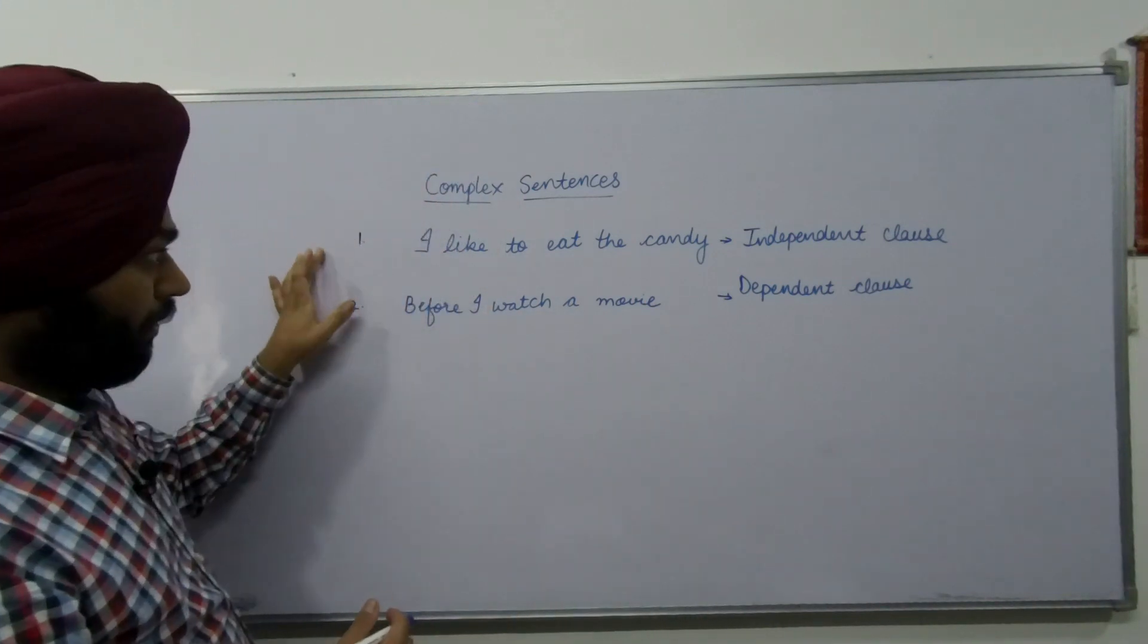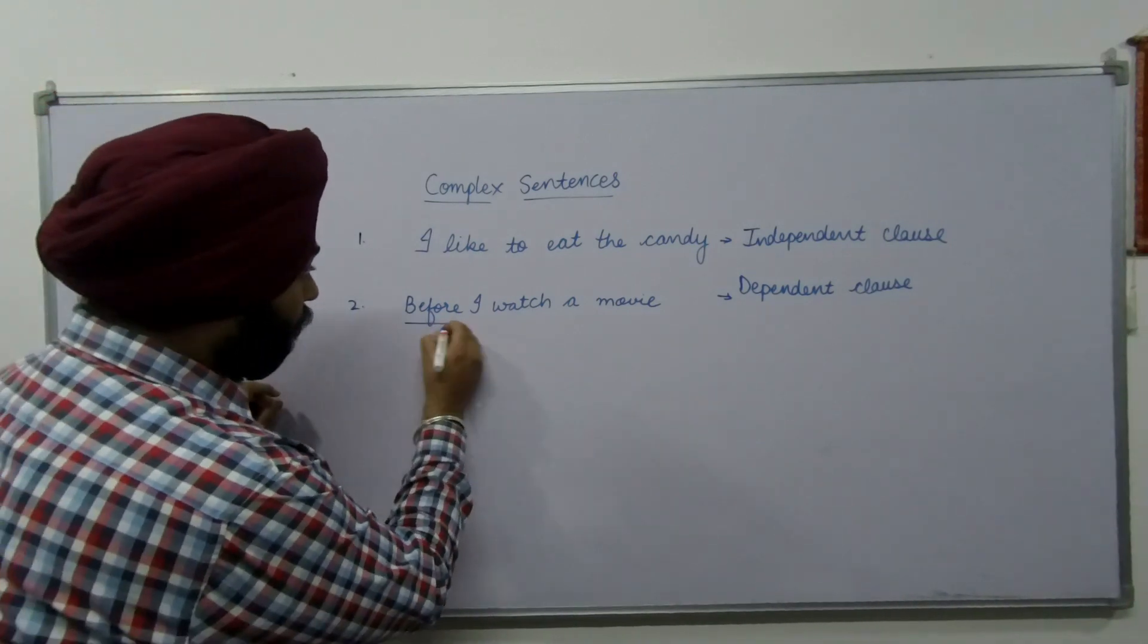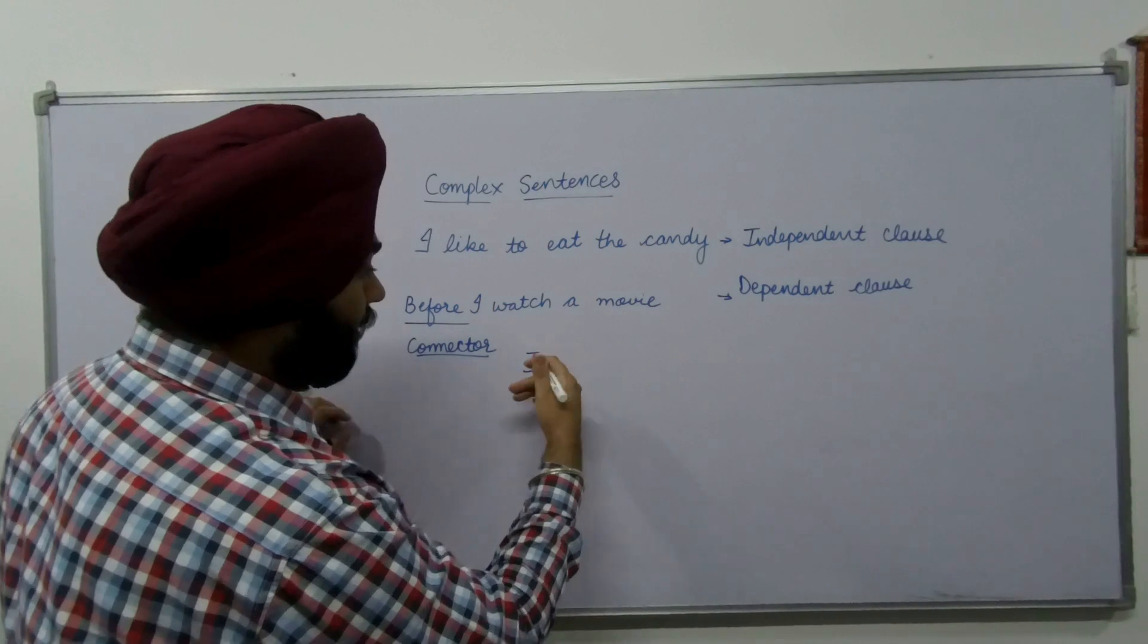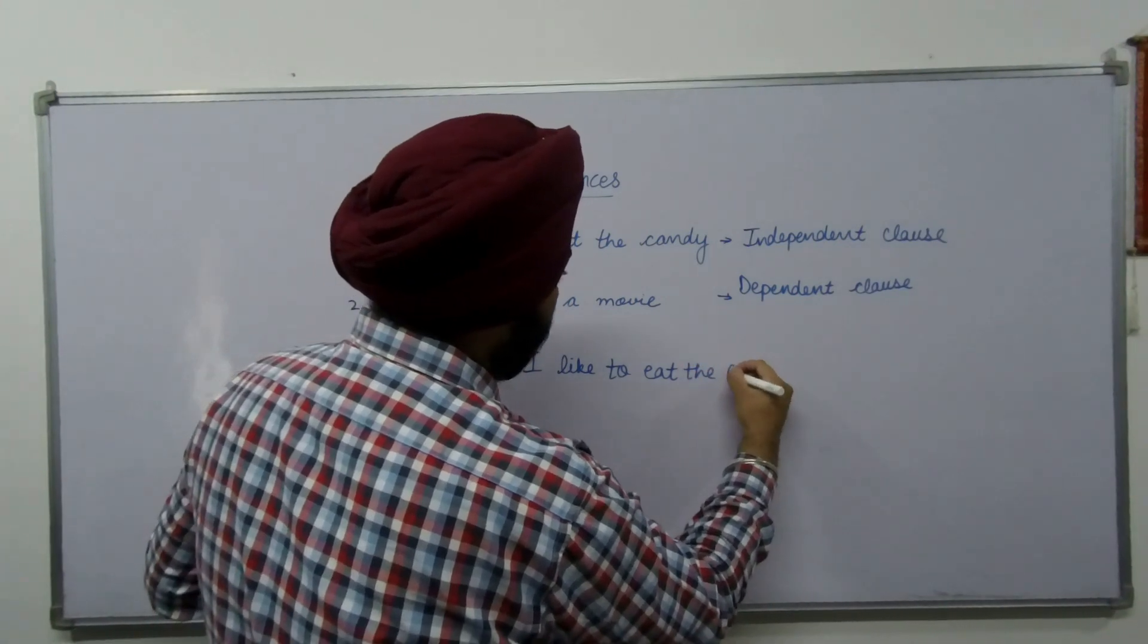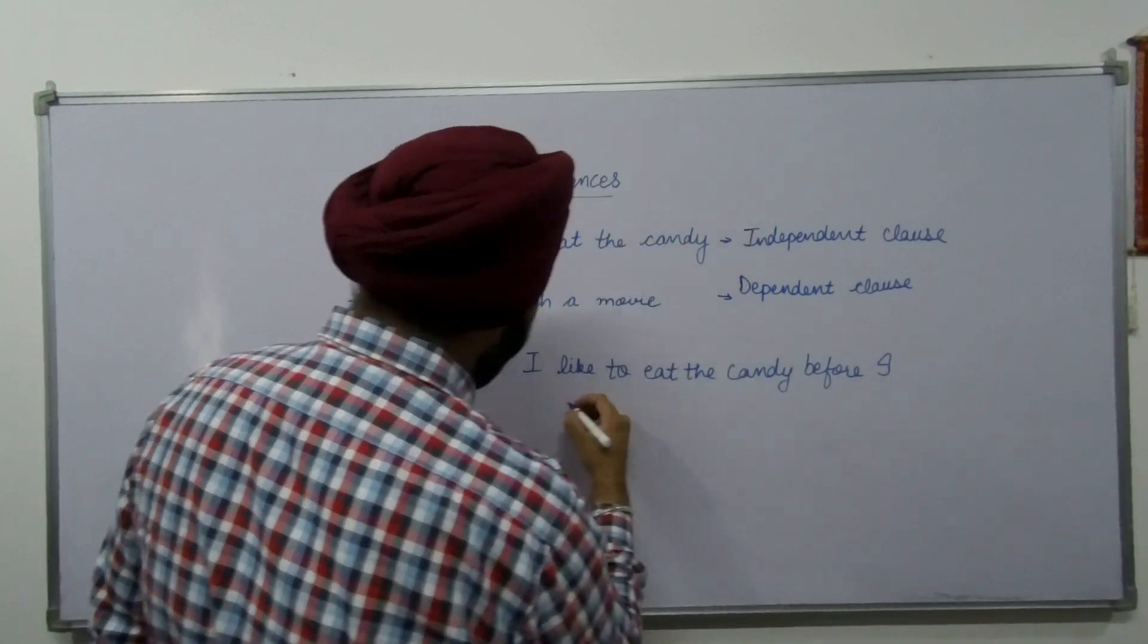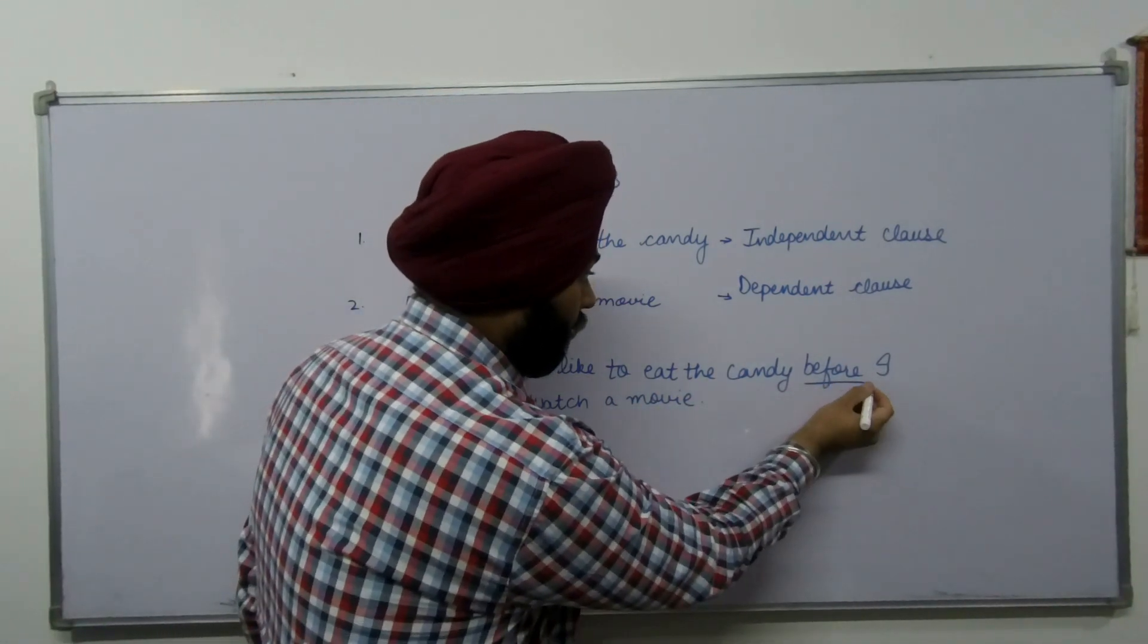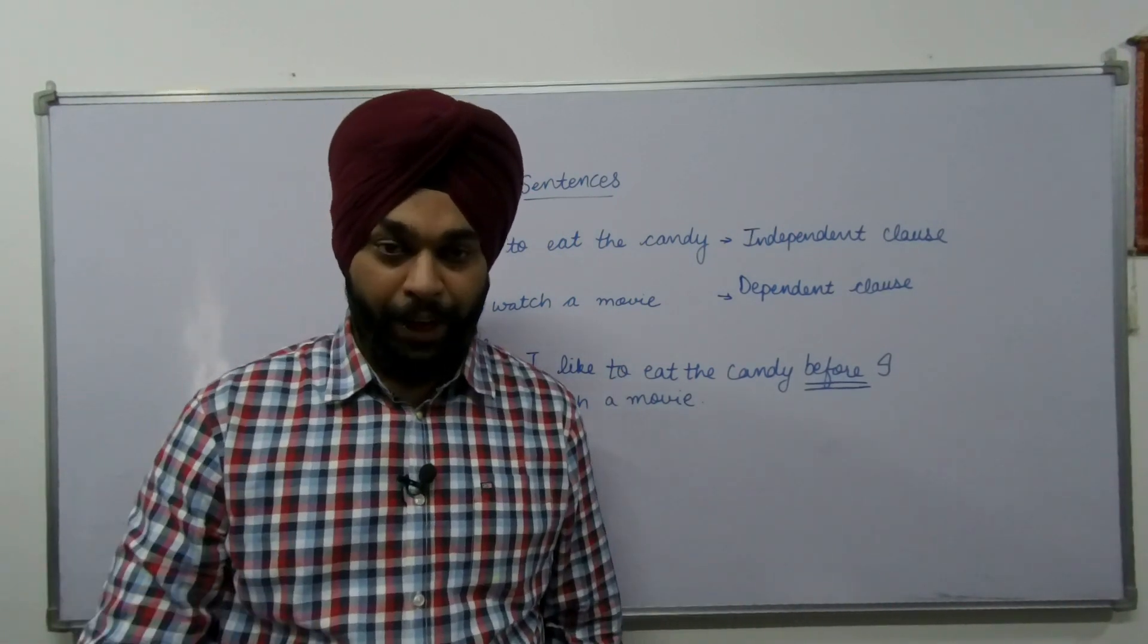If you can clearly see these two sentences, this is the independent clause and this is dependent clause. Now before is a connector. If I use this connector in the middle, I can combine these two sentences. So the sentence will look like this: I like to eat the candy before I watch a movie. By using a connector, you can connect two sentences and form a complex sentence.